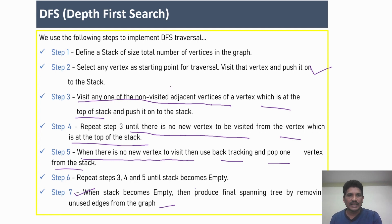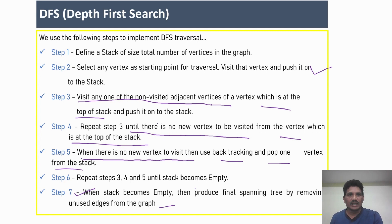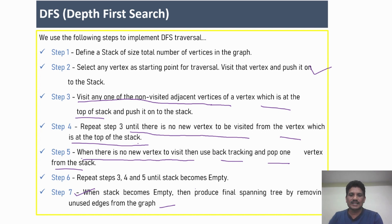First, visit any node in the graph, and once visited, push it into the stack. Then select any non-visited adjacent vertex of that node and push it into the stack as well. Continue these same steps until there are no more nodes to visit. Then pop nodes one by one, checking if any other adjacent nodes exist. If there are no adjacent nodes to be visited, pop them one by one from the stack.